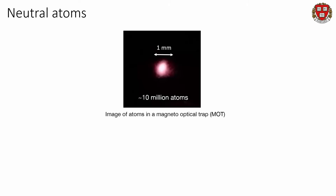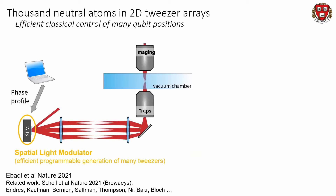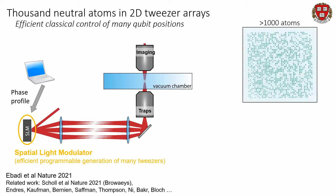This is how all of our experiments start — with a cold gas of rubidium atoms trapped inside our vacuum chamber. I really like showing this image because there are already 10 million atoms right there, and the atoms are really an unlimited resource of cold, identical, neutral atoms. The key challenge is how to control them all in an efficient way. What we do in our lab is take a single laser beam and shine it on a spatial light modulator — an optical device that splits this one laser beam into many programmable individual laser beams, which are then shown into our vacuum chamber. Each tweezer captures an atom with roughly 50% probability from our cold gas of rubidium atoms.